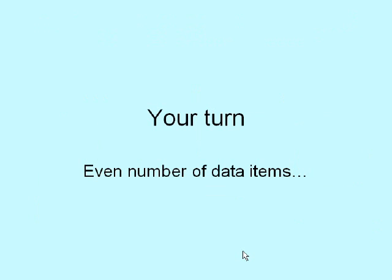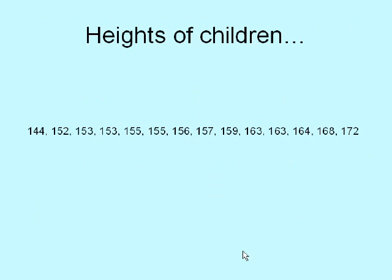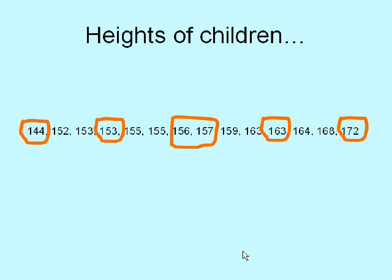Here's one for your turn — an even number of data items: heights of children. I've put the numbers in order of size. My lower quartile was 153, my upper quartile was 163, my bottom number was 144, and my top number was 172. The median is actually 156.5, because it's halfway between the two middle data values, since there's an even number of data.